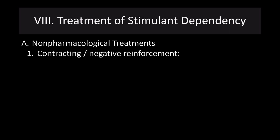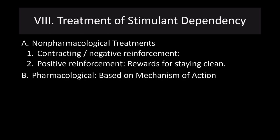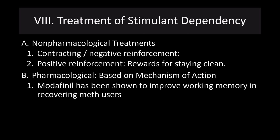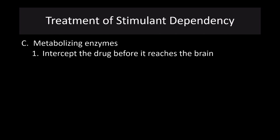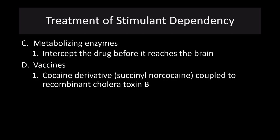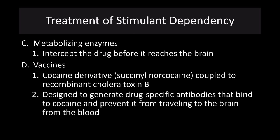How do we treat stimulant dependency? There are no pharmacological treatments currently. A lot of people work with contracting, negative reinforcement, and positive reinforcement. Some pharmacological ideas are based on the mechanism of action — modafinil has been shown to improve working memory — but not much has been shown to be truly effective. Antidepressant treatment might also be appropriate. One idea is to intercept the drug before it reaches the brain by increasing metabolizing enzymes. They are also working on a vaccine for cocaine use, coupled to a cholera toxin, designed to generate drug-specific antibodies that will bind to cocaine or amphetamines and prevent them from traveling to the brain, though that is quite a ways off.